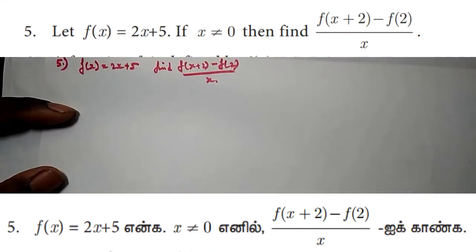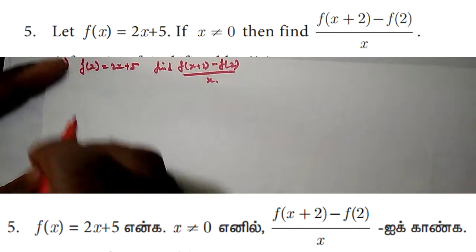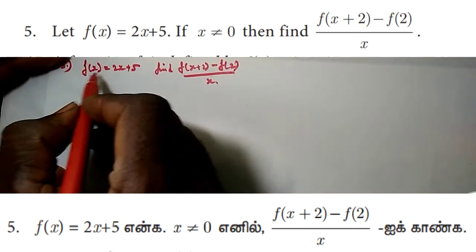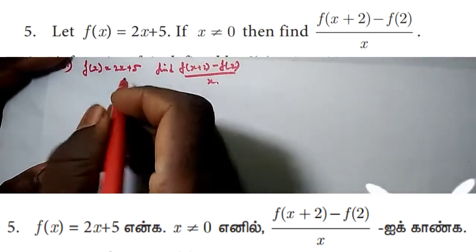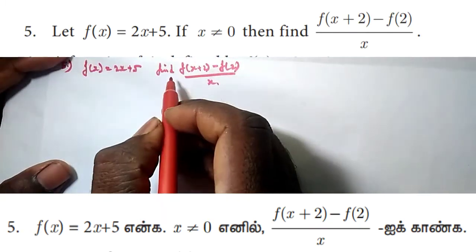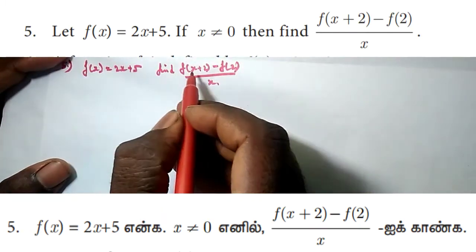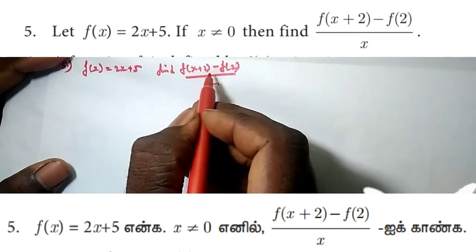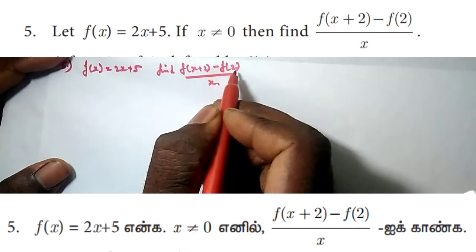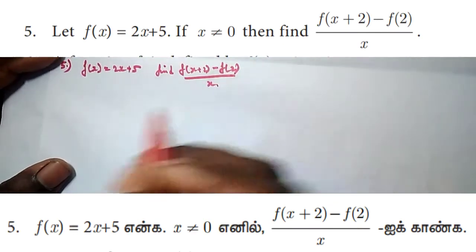Hi friends, welcome. Problem: given f(x) = 2x + 5, find [f(x+2) - f(2)] divided by x.